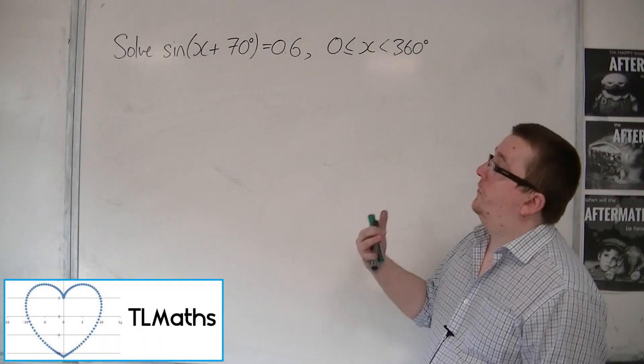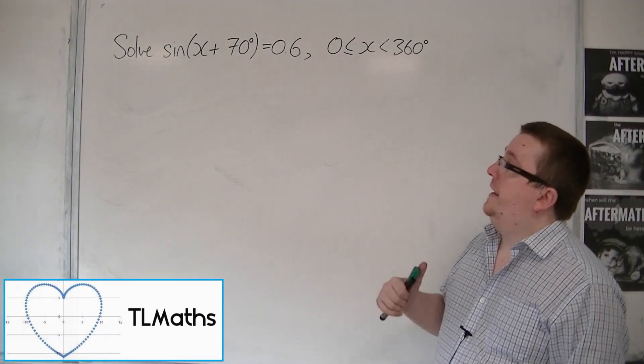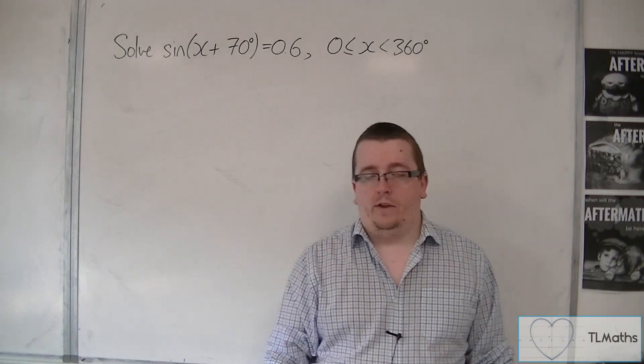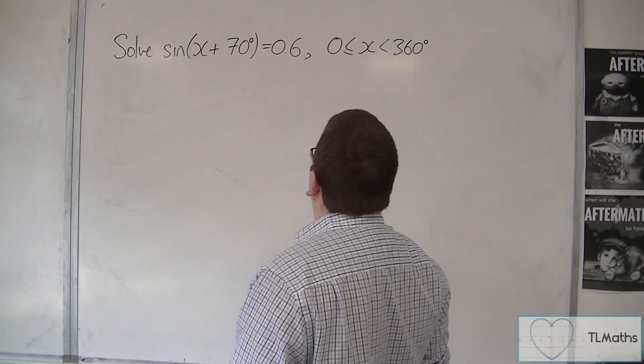In this video, we're going to be solving sine of x plus 70 equals 0.6. And we're going to solve it between 0 and 360.